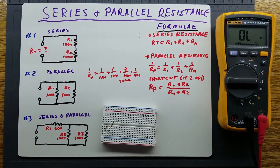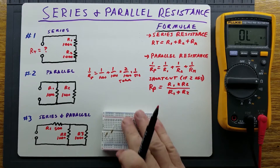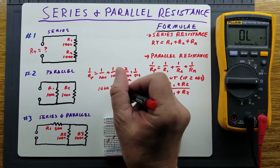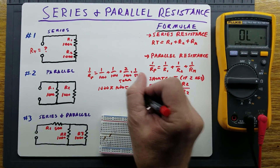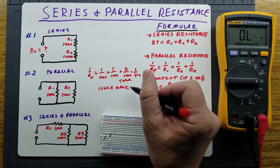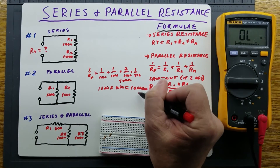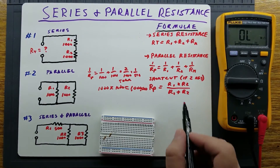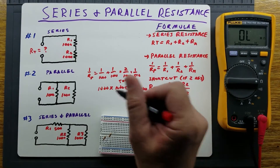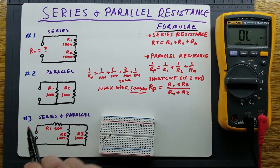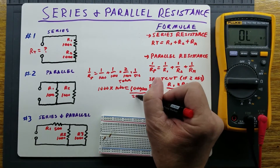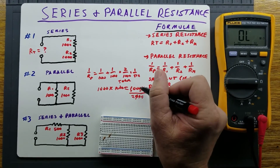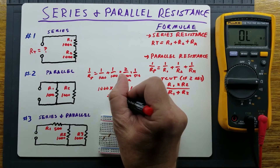Now the other way to calculate that — the shortcut, since we only have two resistors — Rp is equal to R1 times R2, which is 1,000 times 1,000, equal to 1,000,000. Then 1,000,000 divided by R1 plus R2 gives 1,000,000 divided by 2,000, which is 1,000 divided by 2, or 500 ohms.